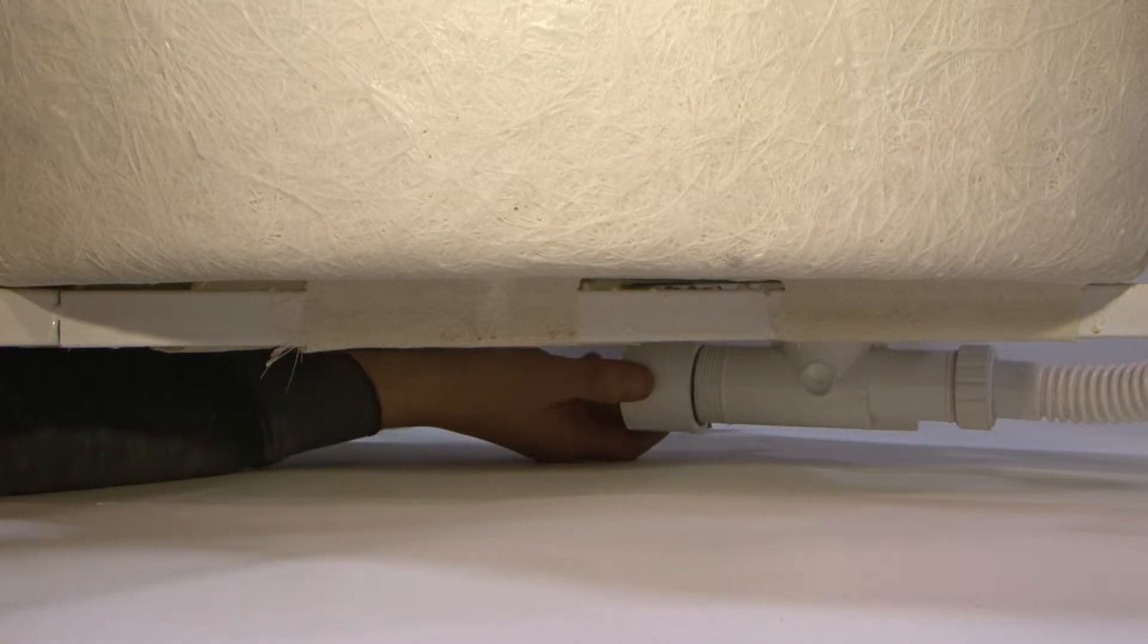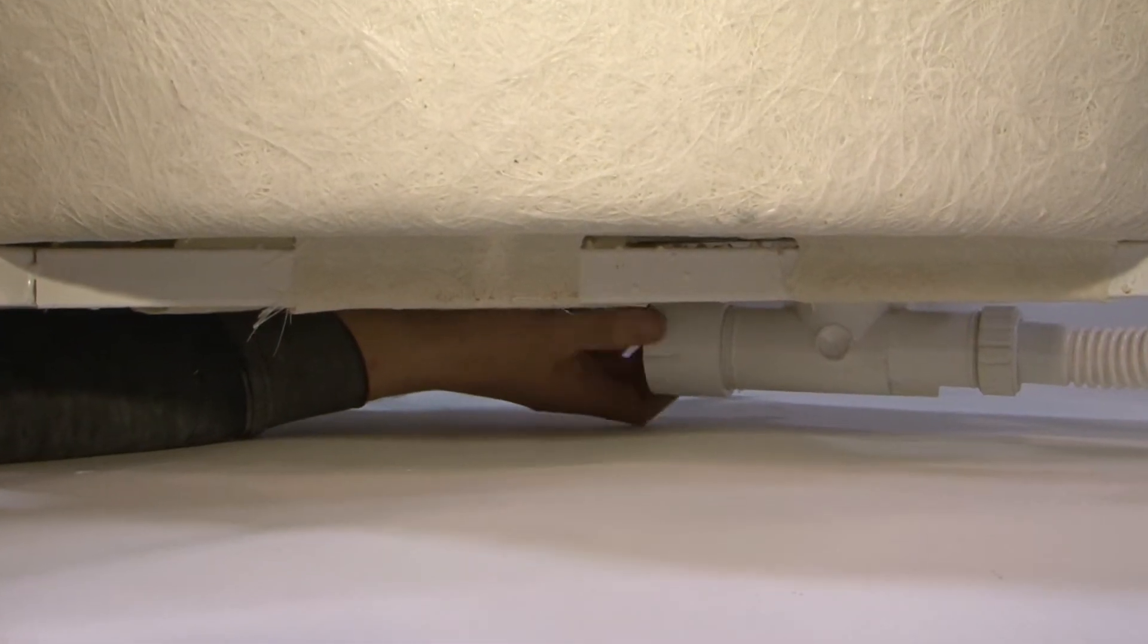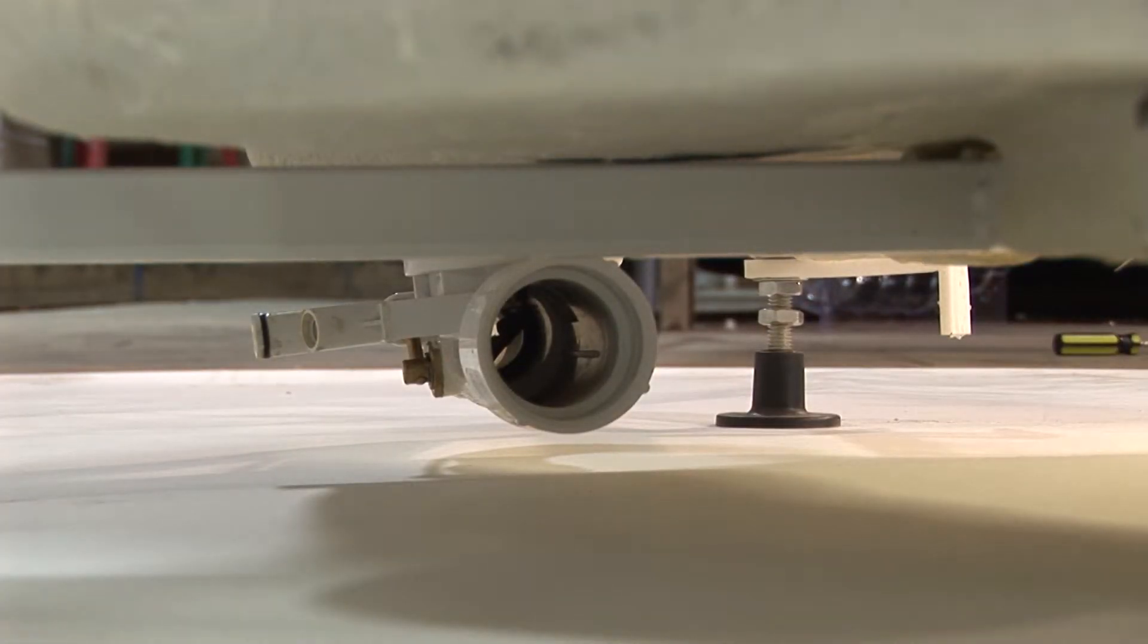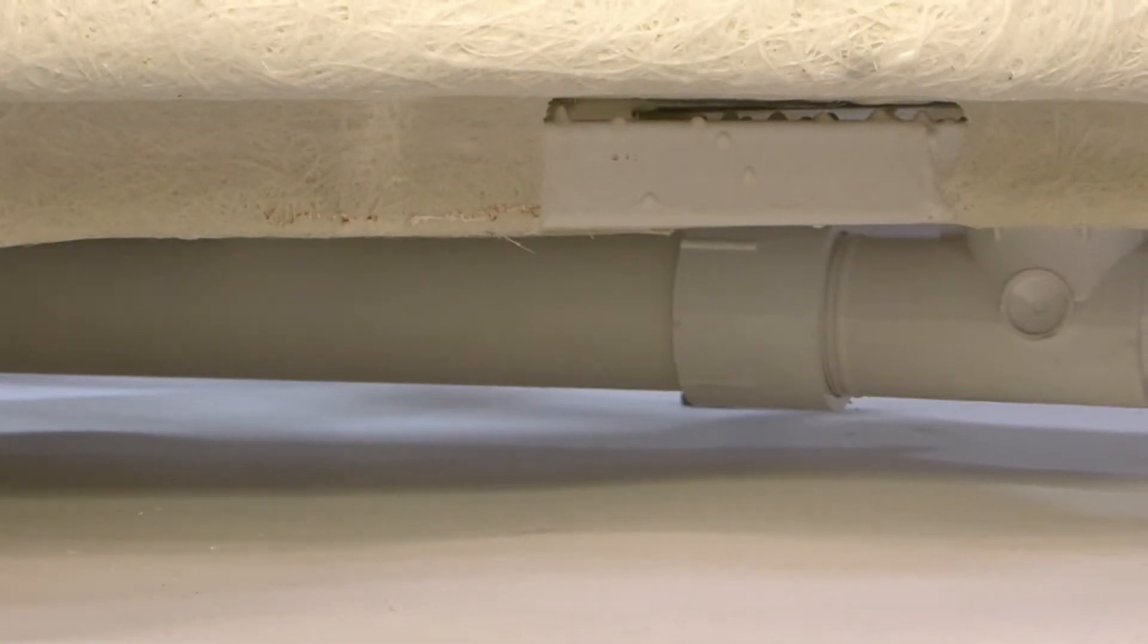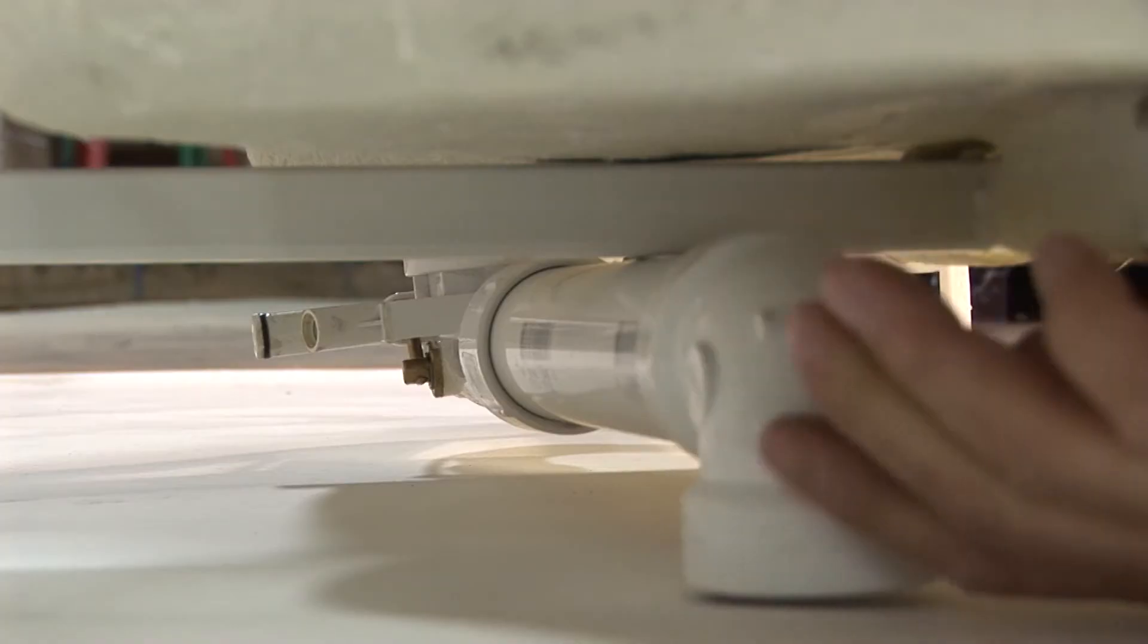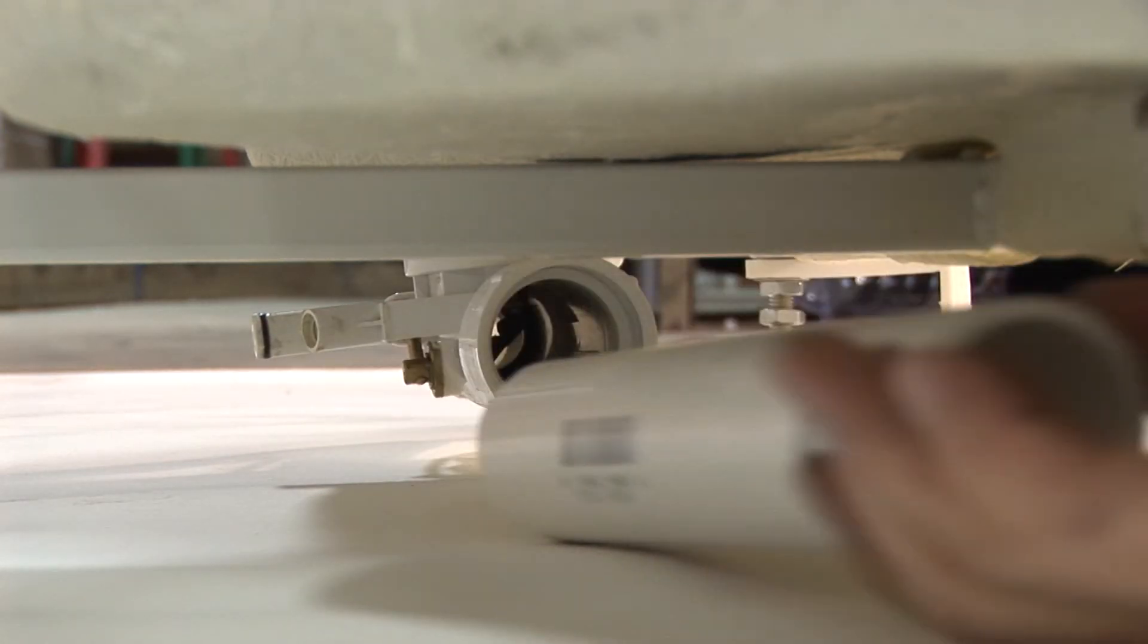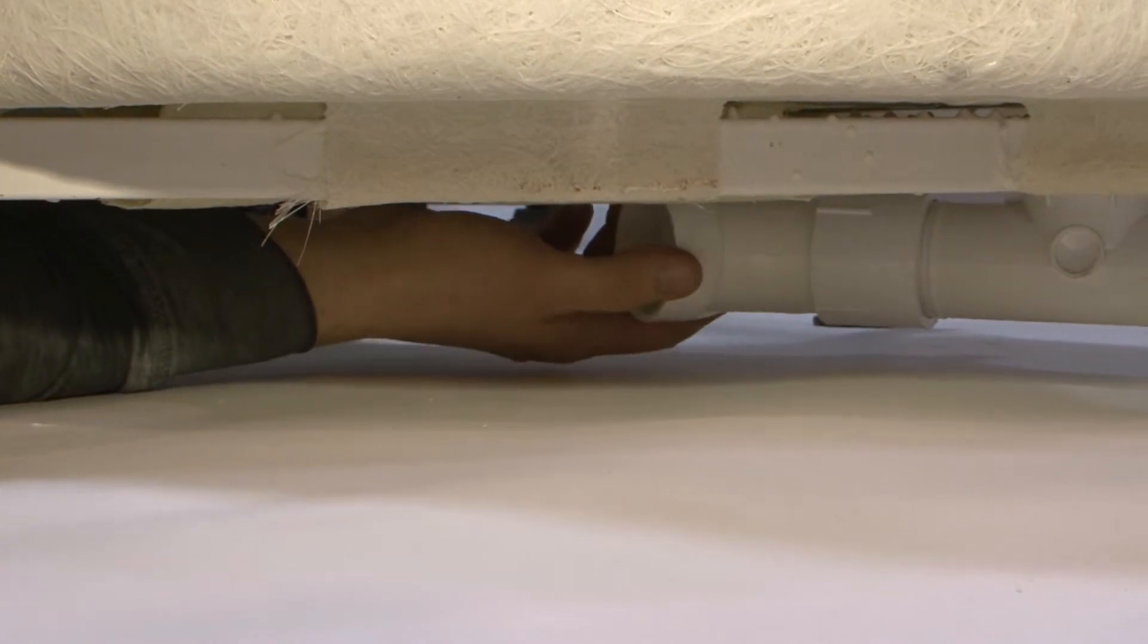adapter which we screw into our overflow, we glue it, and then we can run this line to your existing P-trap using the PVC schedule 40 pipes and elbow down to your P-trap. We can also turn